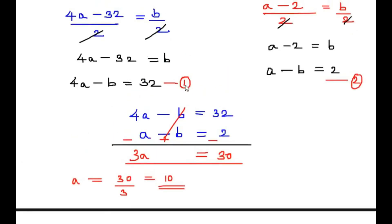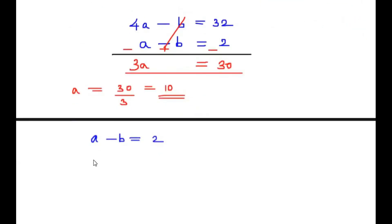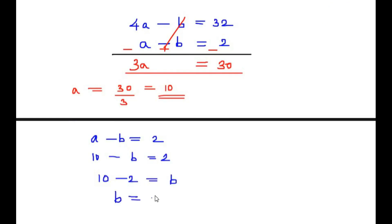Using equation 2 to find b: a − b = 2, substituting a = 10 gives 10 − b = 2, so b = 10 − 2 = 8. Therefore, the two numbers in this question are 10 and 8.